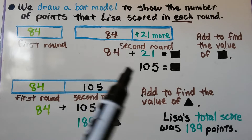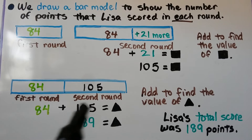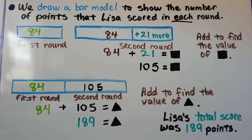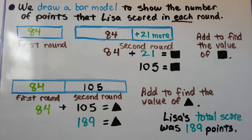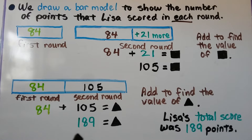Now we know that's what she got in the second round. We need to add the first and second round together to get a total score. We have 84 in the first round and 105 in the second round, and that's going to be equal to a black triangle, so we need to add to find the value of the black triangle. 84 plus 105 is 189, and that's equal to the black triangle. Lisa's total score was 189 points.